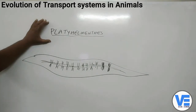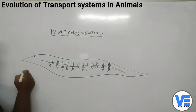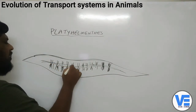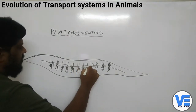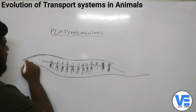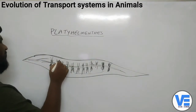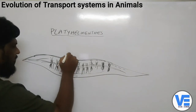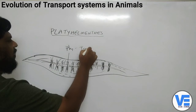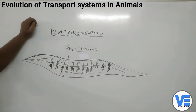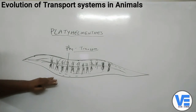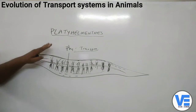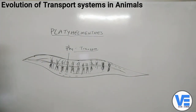In the phylum Platyhelminthes, the digestive system is highly branched. There are no separate circulatory systems. Because the digestive system is completely branched, it sends nutrients to all parts of the body. So in Platyhelminthes, the digestive system itself plays a major role in transporting nutrients — it actually acts as the circulatory system.